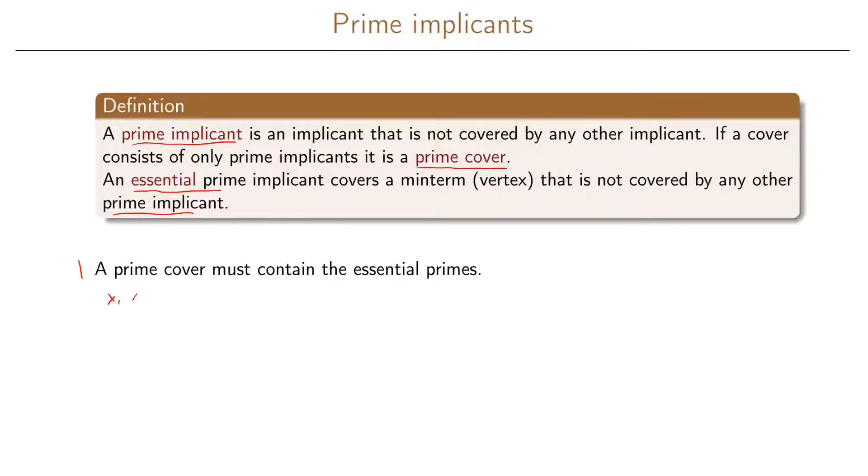If we just take the example that we had before with three variables x1, x2, and x3, enumerating the inputs like this, and then we call the output f. Then we had a function that was 1, 1, 0, 0, don't care, 1, 0, 1.